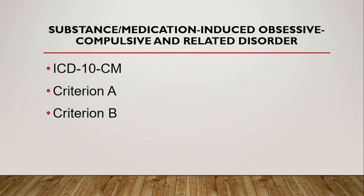If the third position character is 2, the clinician should record moderate substance use disorder or severe substance use disorder, depending on the severity of the comorbid substance use disorder. If there is no comorbid substance use disorder after one-time heavy use of a substance, then the fourth position character is 9 and the clinician should record only the substance-induced obsessive compulsive and related disorder.